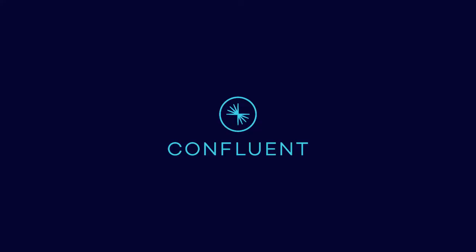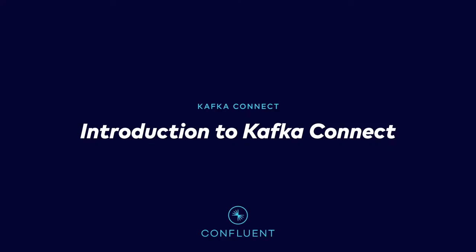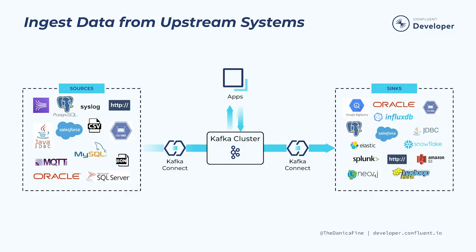Hi, I'm Danica Fine with Confluent, and today I'm going to tell you a little bit about Kafka Connect. Kafka Connect is a component of Apache Kafka that's used to perform streaming integration between Kafka and other systems, such as databases, cloud services, search indices, file systems, and key value stores.